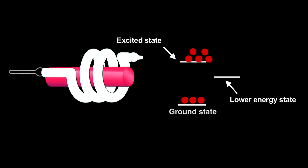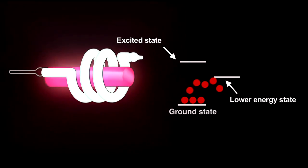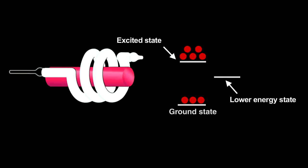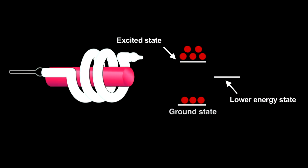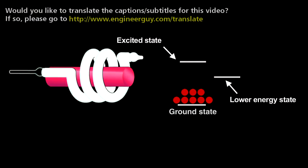Electrons from a population inversion returning to the ground state release light starts an avalanche called stimulated emission. The photon produced when an electron decays induces other excited electrons to simultaneously decay and release nearly identical photons. That creates coherent light, meaning that the crests and troughs of every light wave in the beam match up.